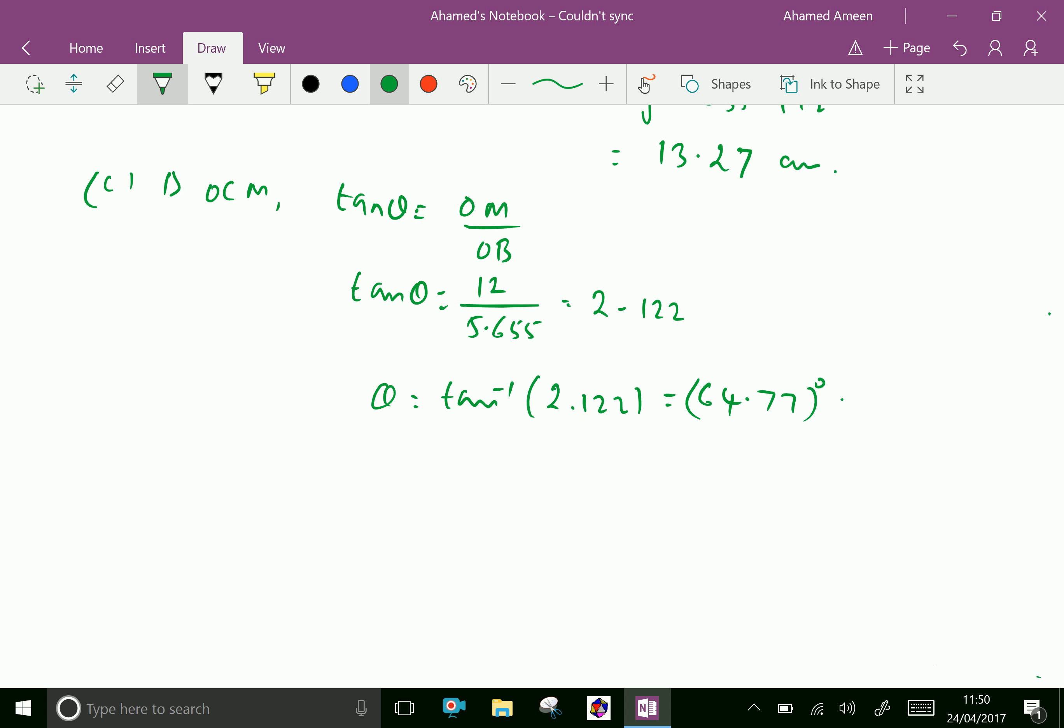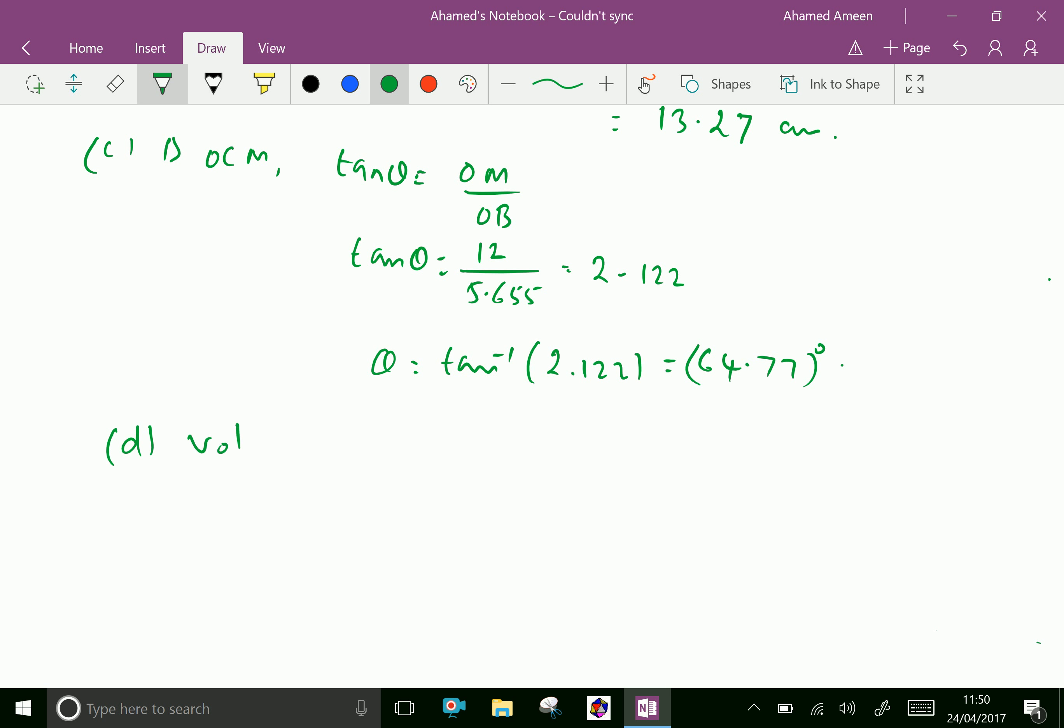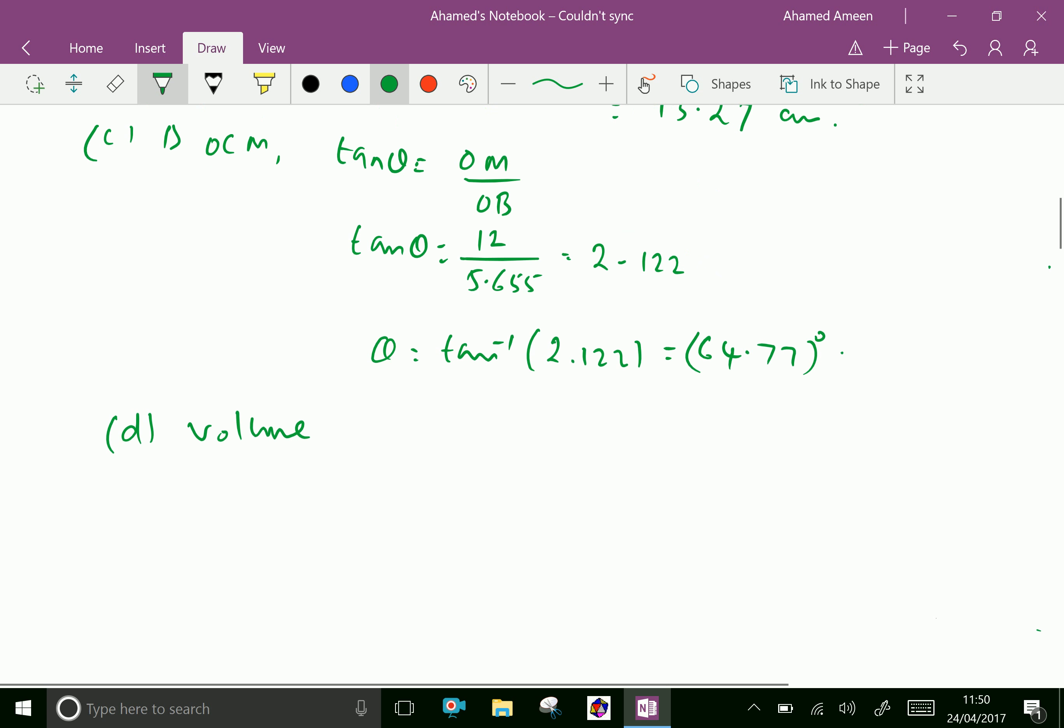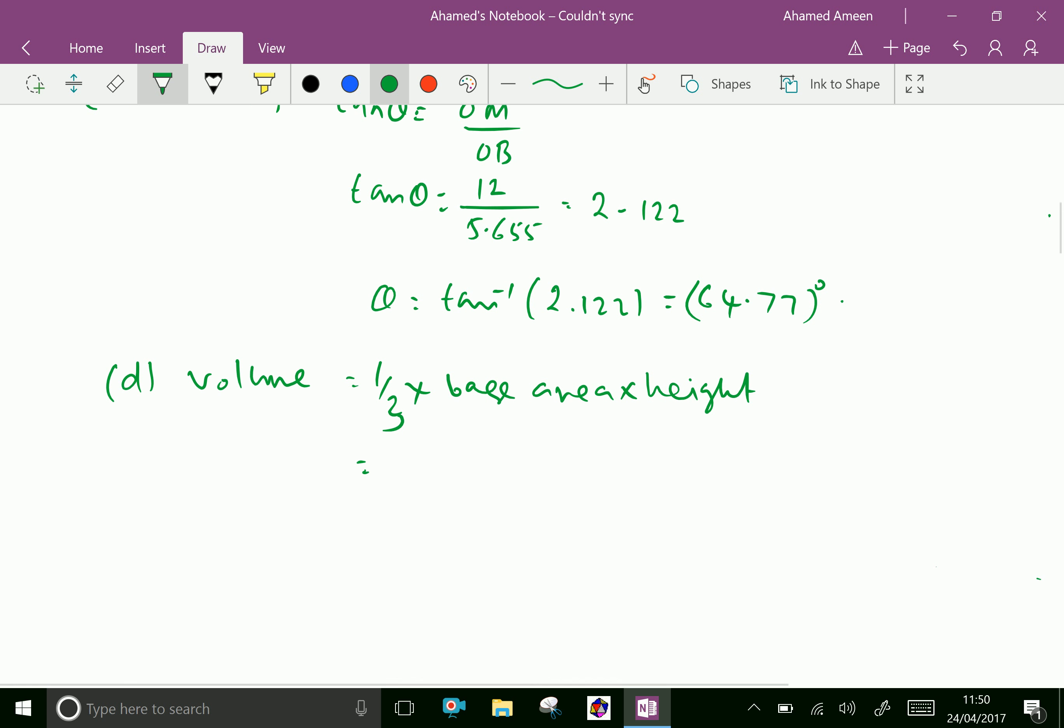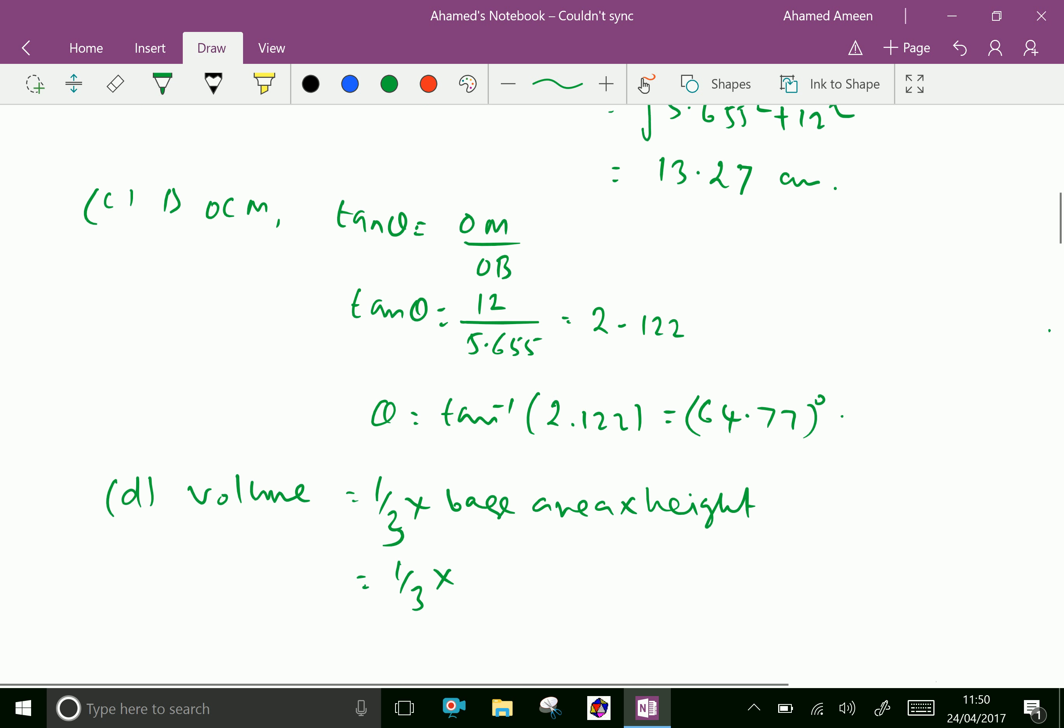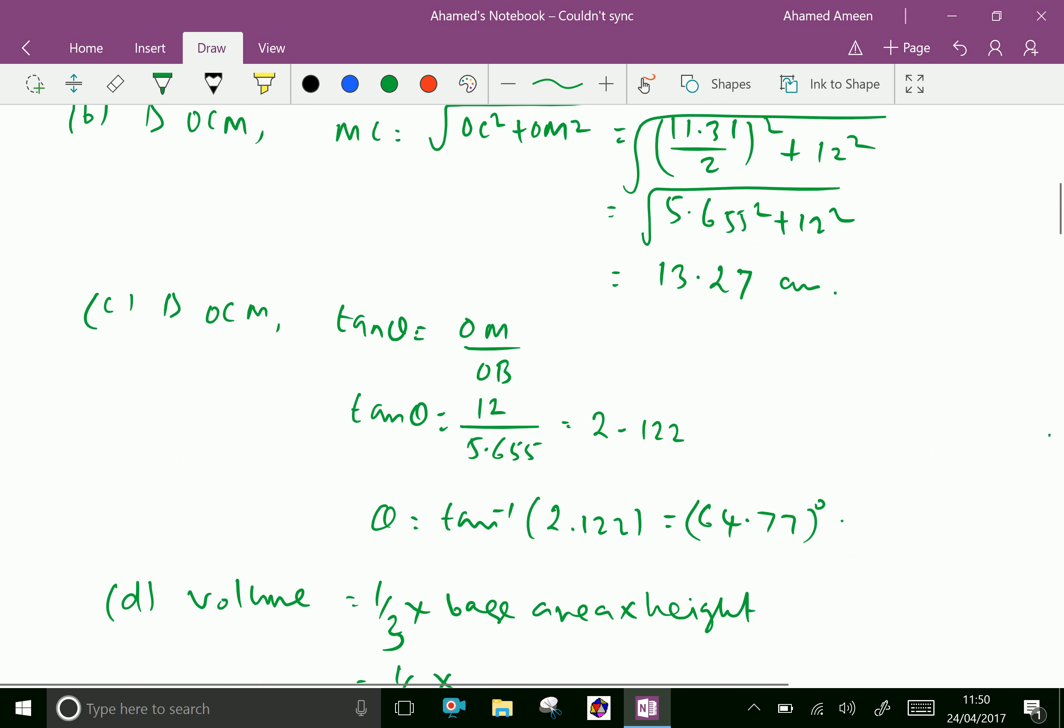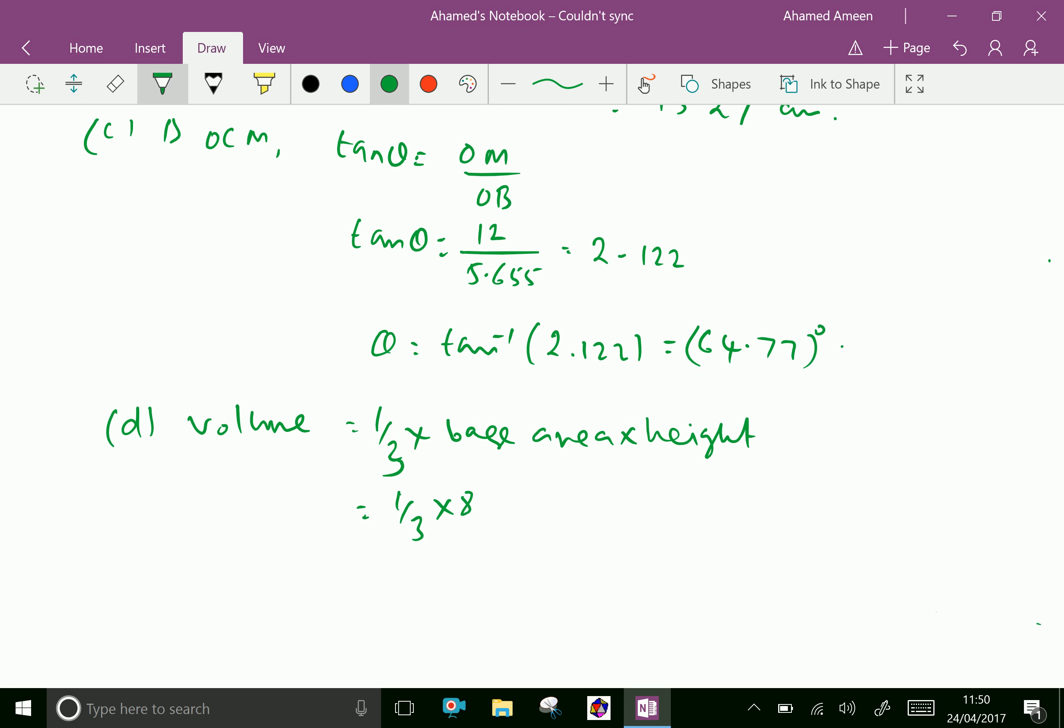Now volume. Volume of the figure uses one-third times base area times height, which equals one-third, base is 8 multiplied by 8, and height is 12, which gives 256 cubic centimeters.